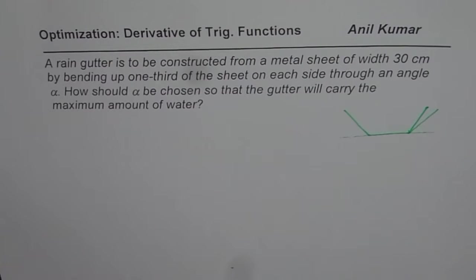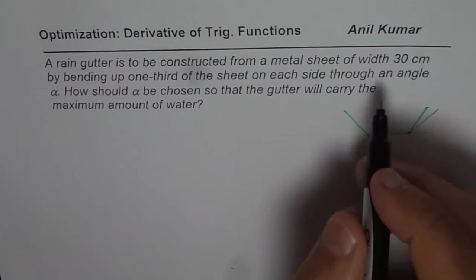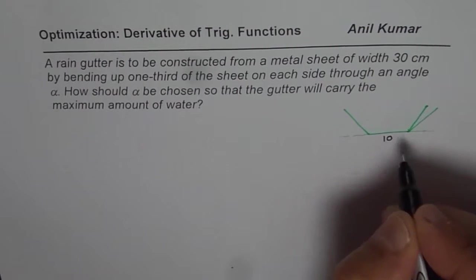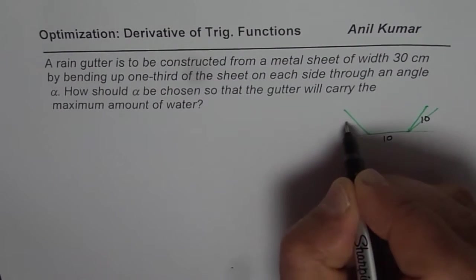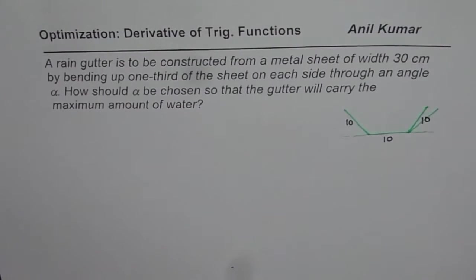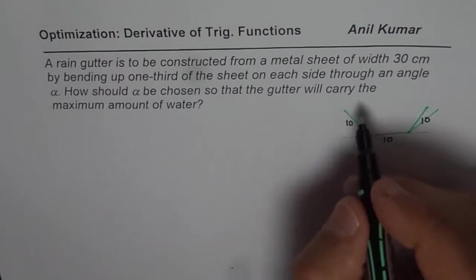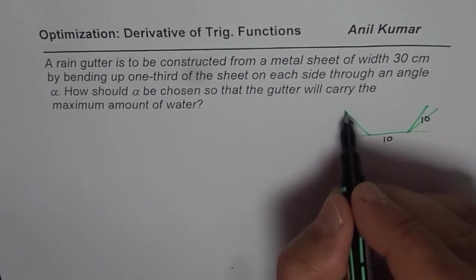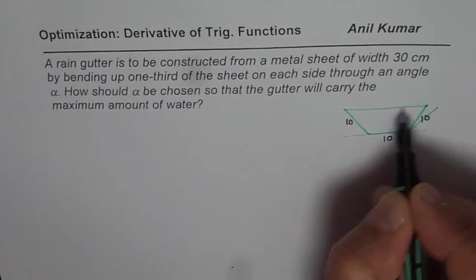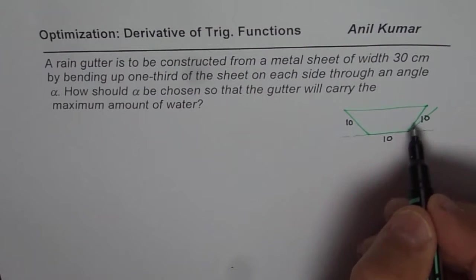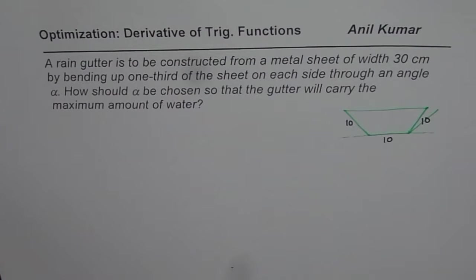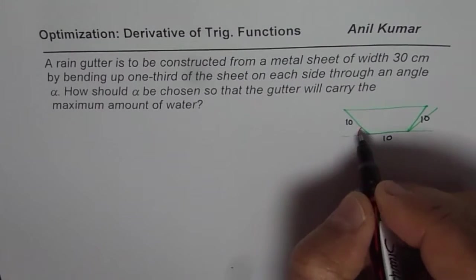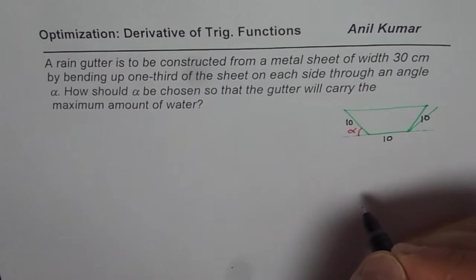You can pause the video, solve and then look into my suggestions. Let me make the sketch first. Let us say 30 centimeters. The sheet is bent one third. The part is kept at the bottom, then equal parts are bent like this.